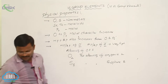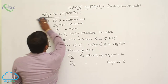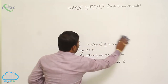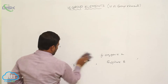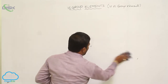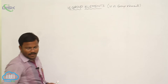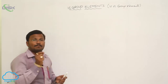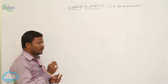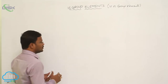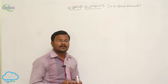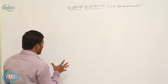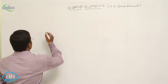To summarize the physical properties of 16th group elements: oxygen and sulfur are non-metals, selenium and tellurium are metalloids, and polonium is a metal with radioactive character. Also, all elements belonging to the 16th group show allotropy — the same element available in different forms.